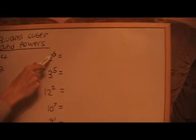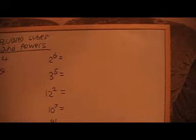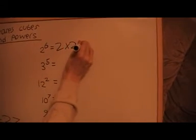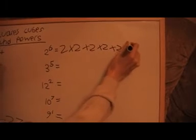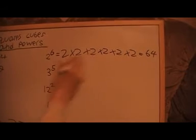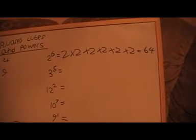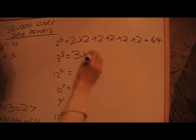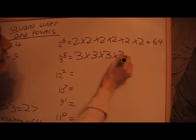Now, whatever number this number up here is — the little one at the top, which is called a power — that tells us how many times we've got to multiply this number by itself. So I've got here 2 to the power of 6. That means I need to times 2 by itself 6 times. So I've got 2 times 2 times 2 times 2 times 2 times 2, and that comes out to be 64. And 3 to the 5 is 3 times 3 times 3 times 3 times 3.